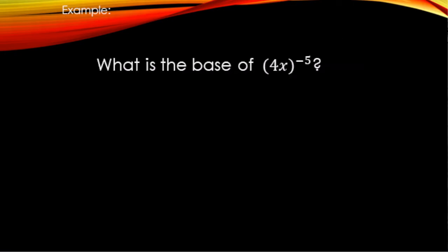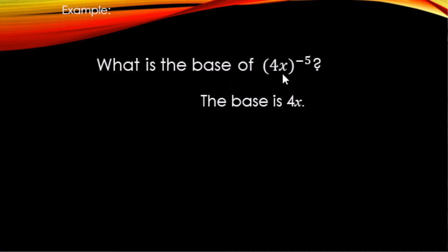What is the base of (4x) to the negative fifth power? The base is 4x. Without parentheses, just x would be the base, but the parentheses keep the 4 and the x together, so 4x is the base.